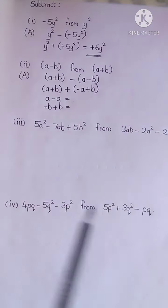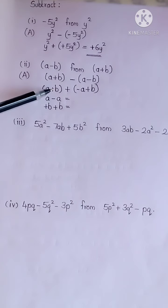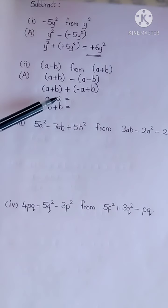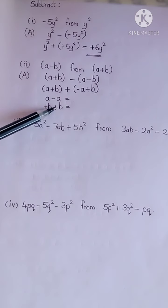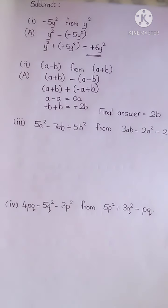You can see I have combined the like terms: a minus a, plus b plus b. So what is a minus a? Zero. Plus 1b plus 1b equals 2b. So the final answer is 2b.